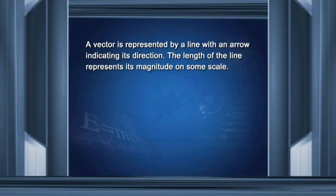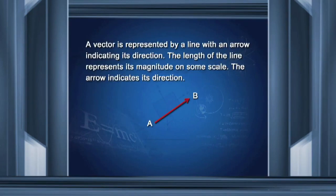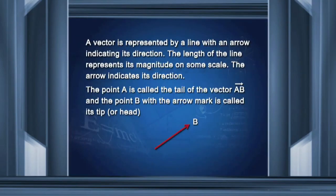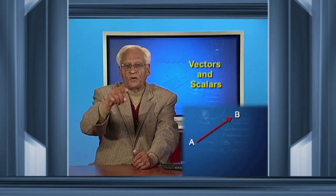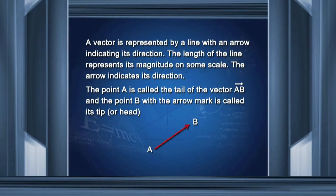How do you represent a vector? A vector is represented by a line with an arrow on one side. The arrow indicates its direction and the length of the line indicates its magnitude. The starting point A is called the tail of the vector and B — where the arrow points — is called the head or tip of the vector.